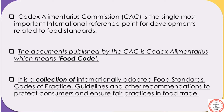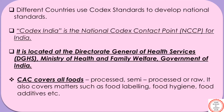The document published by CAC is Codex Alimentarius, which means Food Code. It is a collection of internationally adopted food standards, code of practice, guidelines, and other recommendations to protect consumers and ensure fair practices in food trade. Different countries use Codex standards to develop national standards. Consumers and importers can trust the safety and quality of the food product which they buy or order, as it will be according to their specification.